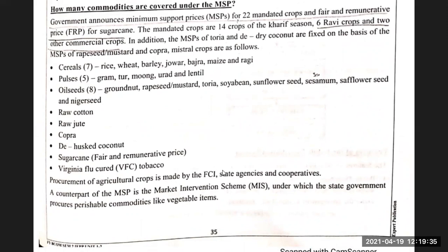The 22 mandated crops are: 14 crops of Kharif season, 6 Rabi crops, and 2 commercial crops.